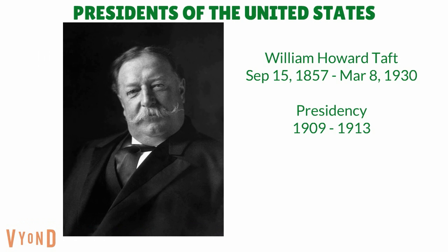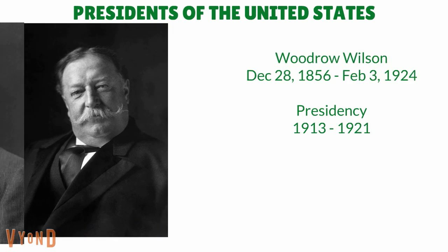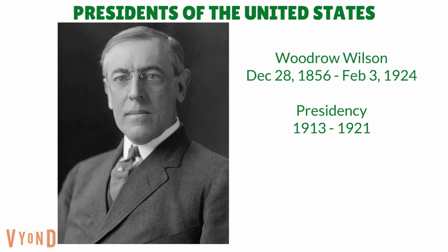William Howard Taft was our twenty-seventh president of the United States. He was born on September 15th, 1857. He was a president from 1909 to 1913. He retired in 1913 and later died on March 8th, 1930. Woodrow Wilson was our twenty-eighth president of the United States. He was born on December 28th, 1856. He was a president from 1913 to 1921. He got re-elected in 1916 and his second term began in 1917. He later retired in 1921 and died on February 3rd, 1924.